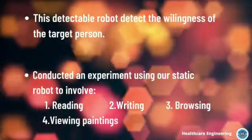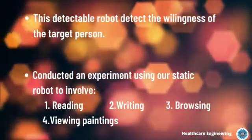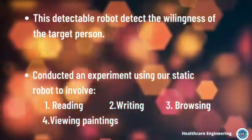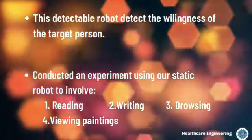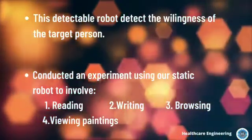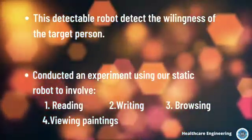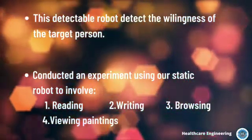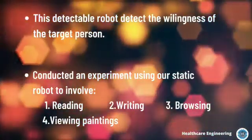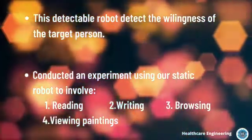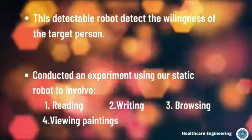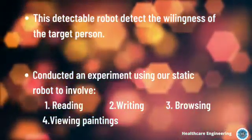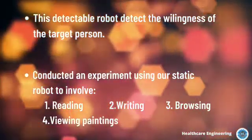The attention level is used to determine the suitable time to attract the target person's attention towards the robot. Then this robot detects the willingness of the target person to interact with it. Depending on the level of interest, the robot generates awareness and establishes a communication channel with the person.